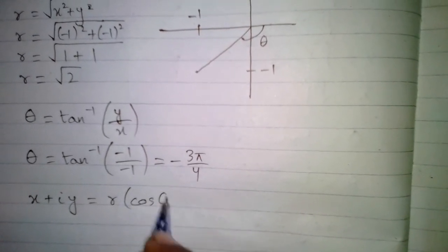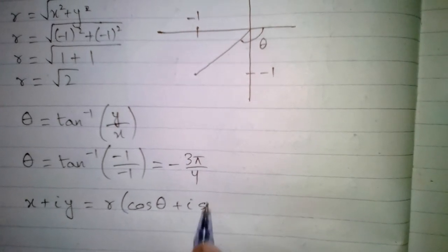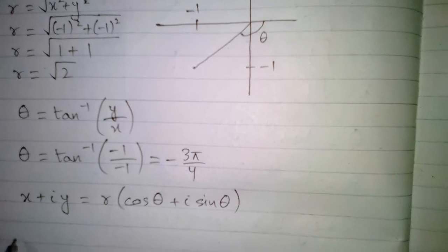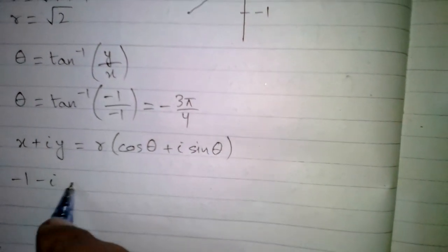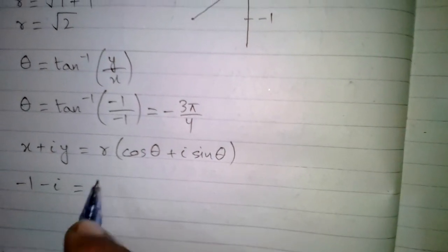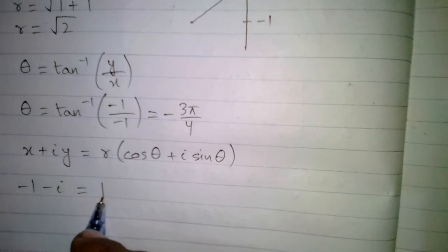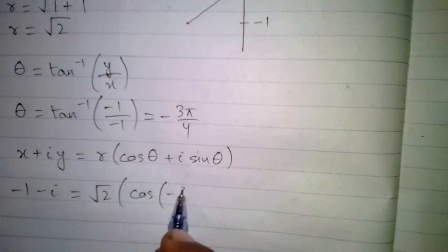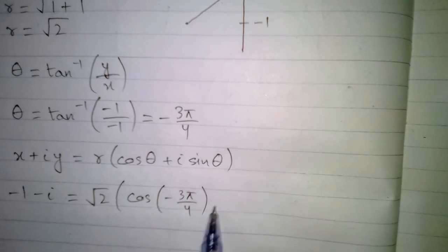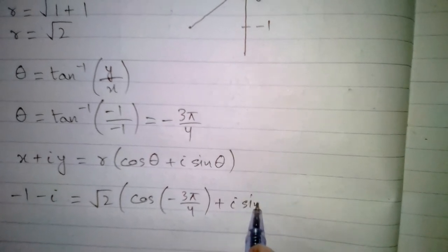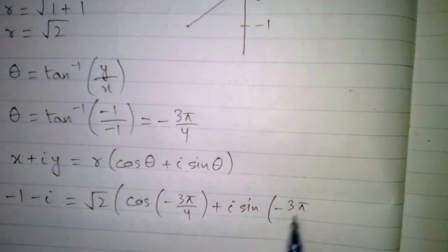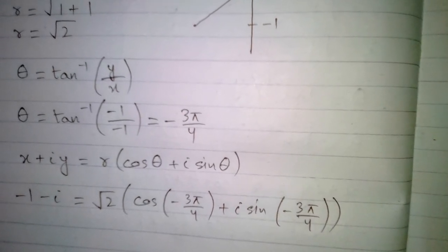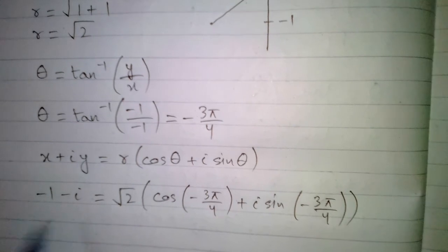Any complex number x plus iota y can be expressed in polar form as r times cos theta plus iota sin theta. So the complex number minus 1 minus iota is equal to root 2 times cos of minus 3 pi by 4 plus iota sin of minus 3 pi by 4. This is the polar form of the complex number minus 1 minus iota.